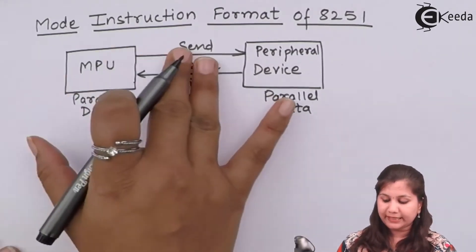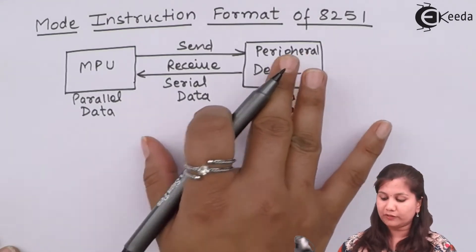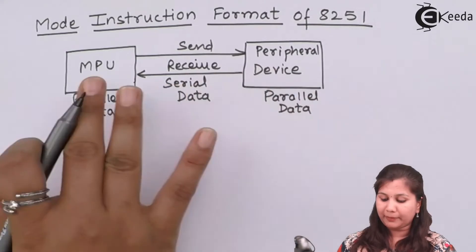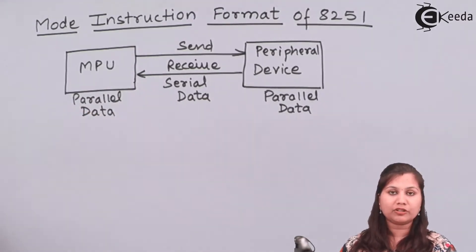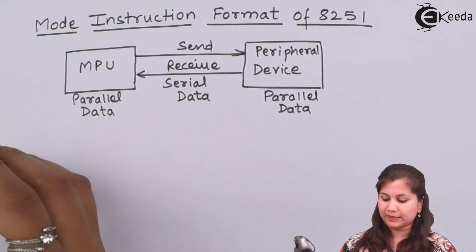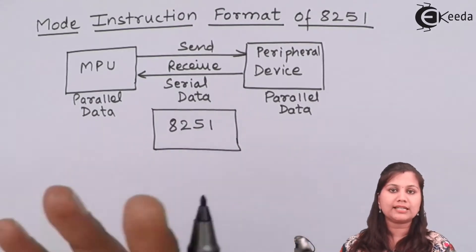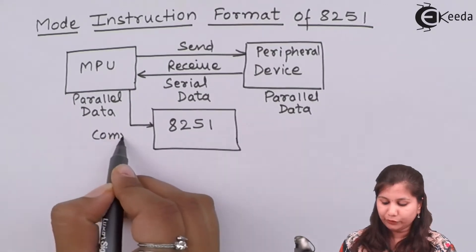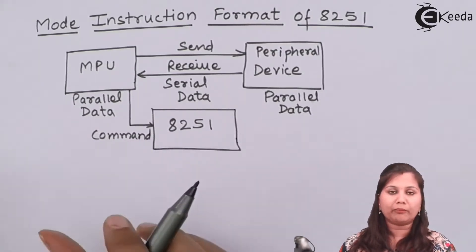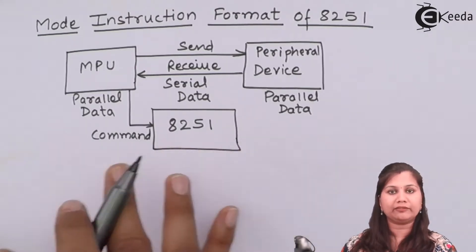When the microprocessor is sending data to a peripheral device, it has to convert it from parallel to serial form. When the microprocessor is receiving data, it has to convert the serial data into parallel form. So both serial-to-parallel and parallel-to-serial conversion has to be performed.